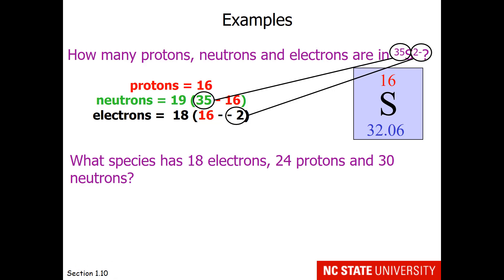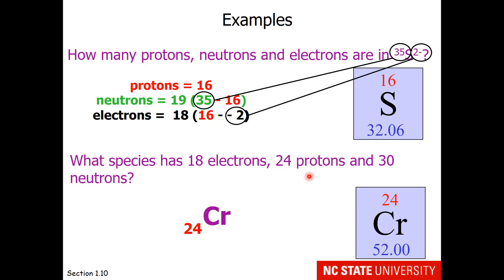Let's try another one. What species has 18 electrons, 24 protons, and 30 neutrons? We go to the periodic table and find out who has 24 protons — it's chromium. Chromium has an average atomic mass of 52, but let's see if this particular one does. To get the atomic mass, we add protons and neutrons: 24 plus 30 gives us an isotope with an atomic mass of 54, not the average of 52. For the charge, protons minus electrons gives us 24 minus 18, which is chromium 6+.